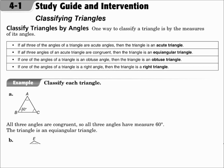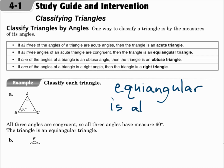If all three angles of a triangle are acute, then it's an acute triangle. If all three angles are congruent, then it's equiangular. If one angle is obtuse, then it's an obtuse triangle, and if one angle is right, then it's a right triangle. Remember, equiangular triangles are always acute.